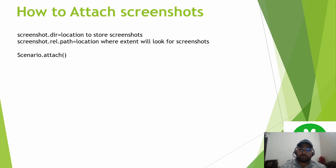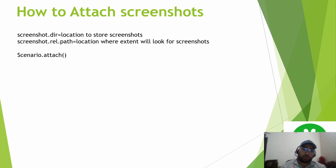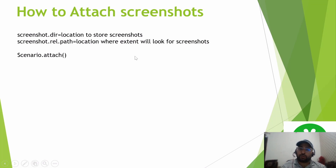Hello everyone, welcome back to my channel Prince Automation Destination. In our last lecture of the Cucumber series, we discussed how to customize Extent Report, covering various options of customization. If you haven't gone through that video, I'll request you to please take a look at my previous video which I'll share in the eye icon. Today we are going to talk about another important topic: how to attach screenshots.